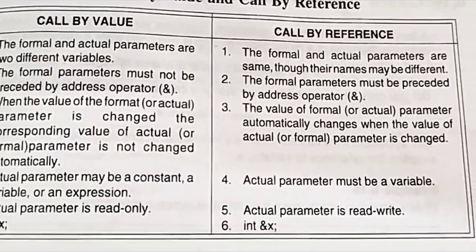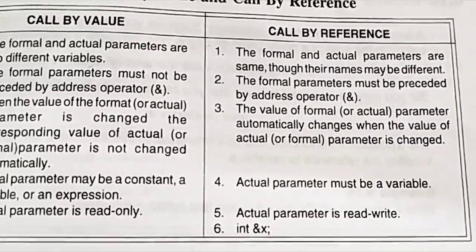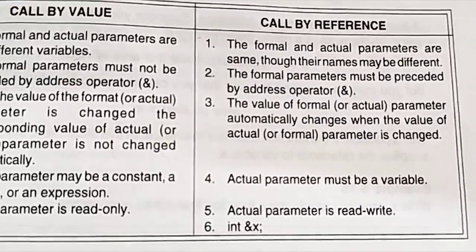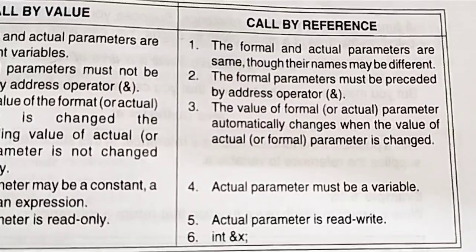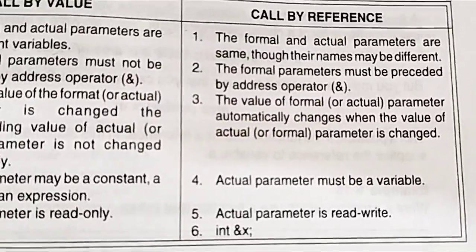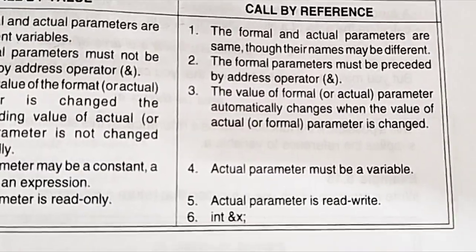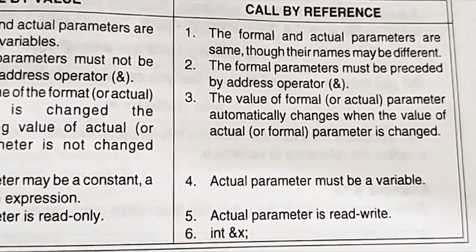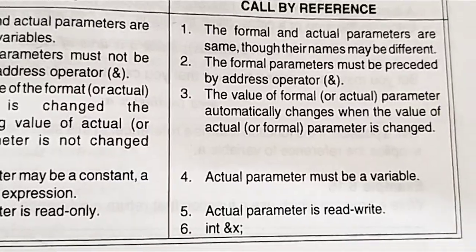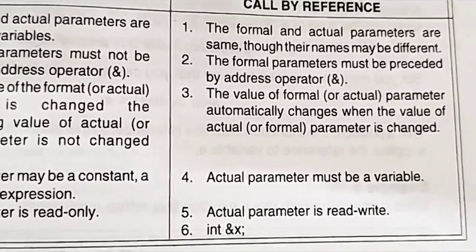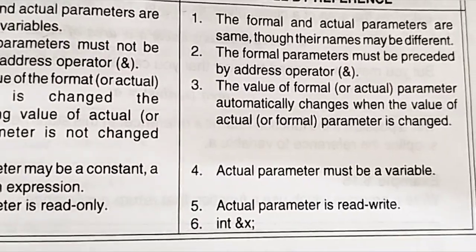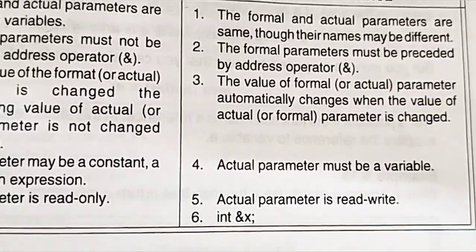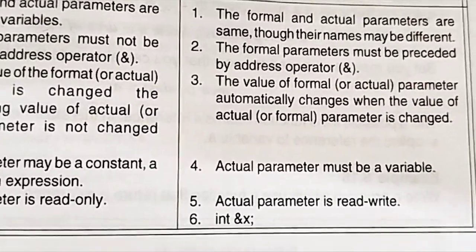Based on the call by value and call by reference concept, consider the swapping program. When we use functions for swapping, we have to use call by reference, because when we change a formal argument in call by value, the change will not reflect in the actual variable since they are stored at different memory locations. So to actually swap values, we need to use pointer variables and reference operators.